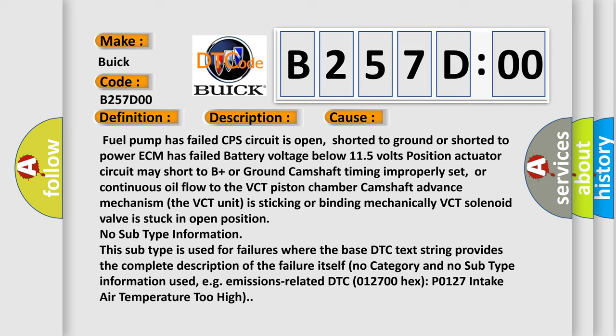No subtype information. This subtype is used for failures where the base DTC text string provides the complete description of the failure itself. No category and no subtype information used, e.g.